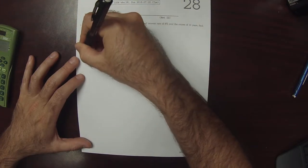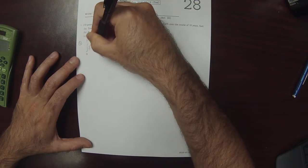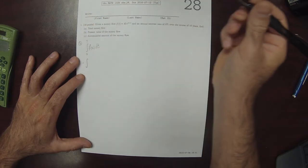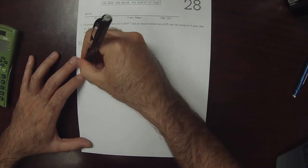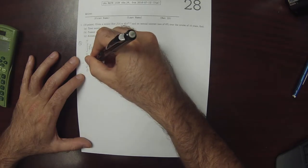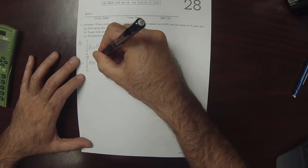So the formula for this one is 0 to big T, f of t, dt. And on this particular exercise, that means 0 to 10, and then 40 exponential 0.1 T, dt.